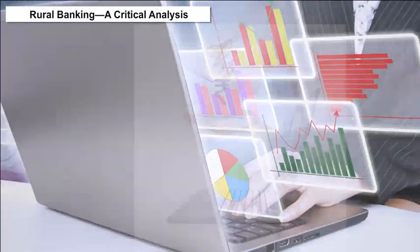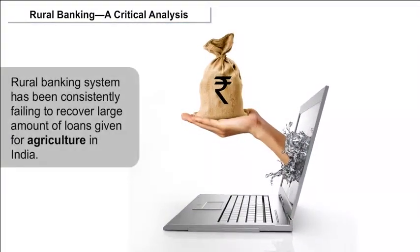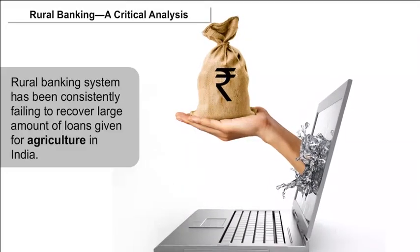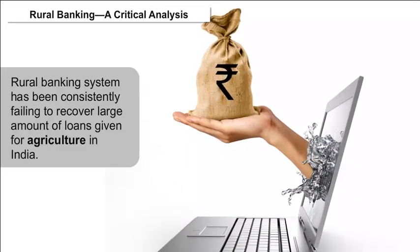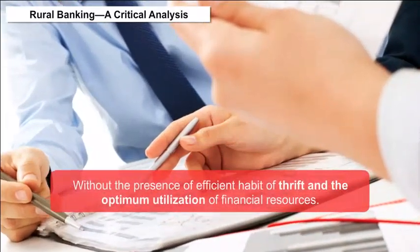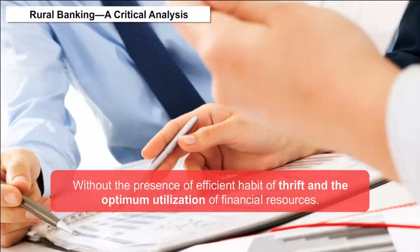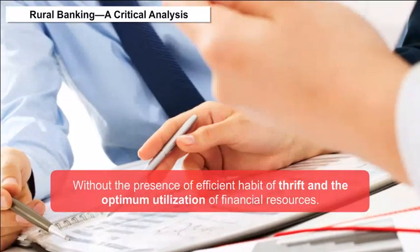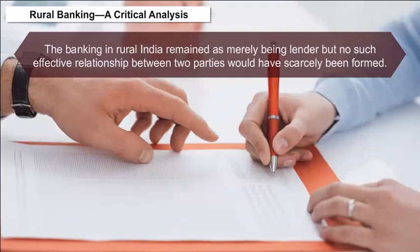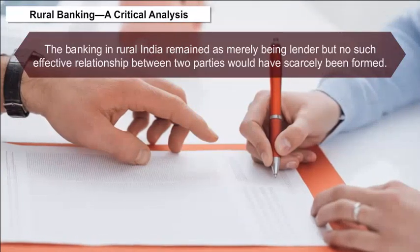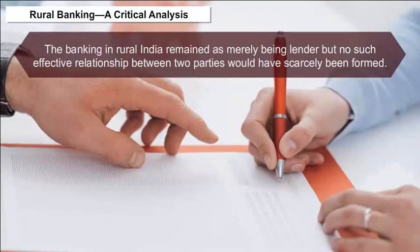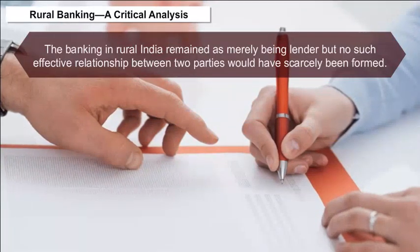Rural banking has been consistently failing to recover large amounts of loans given for agriculture in India. Without the presence of an efficient habit of thrift and the optimum utilization of financial resources, despite several attempts, banking in rural India remained as merely being a lender, with no such effective relationship between the two parties having scarcely been formed.